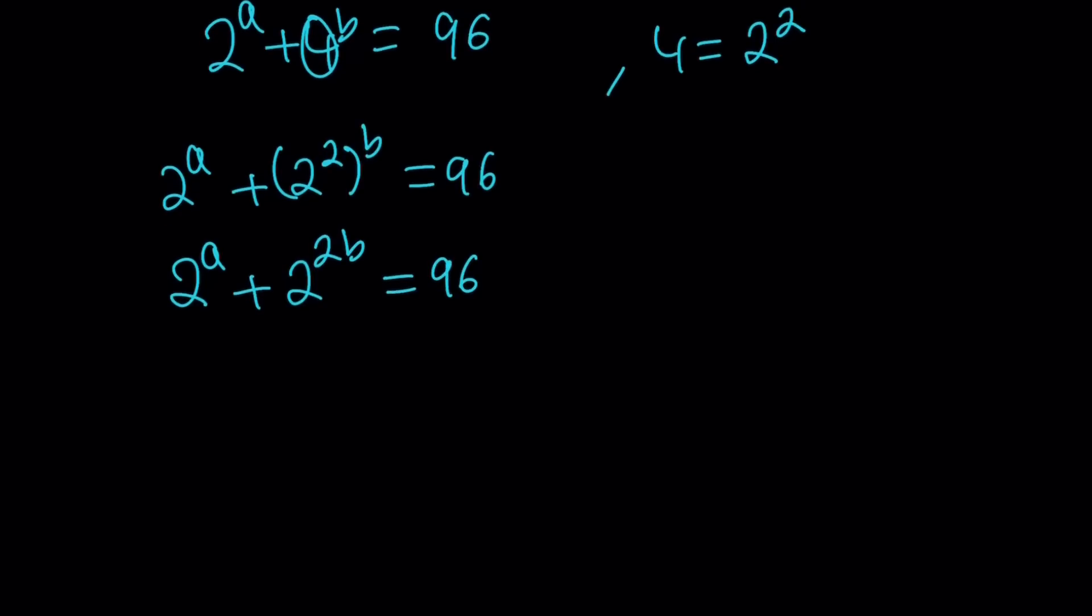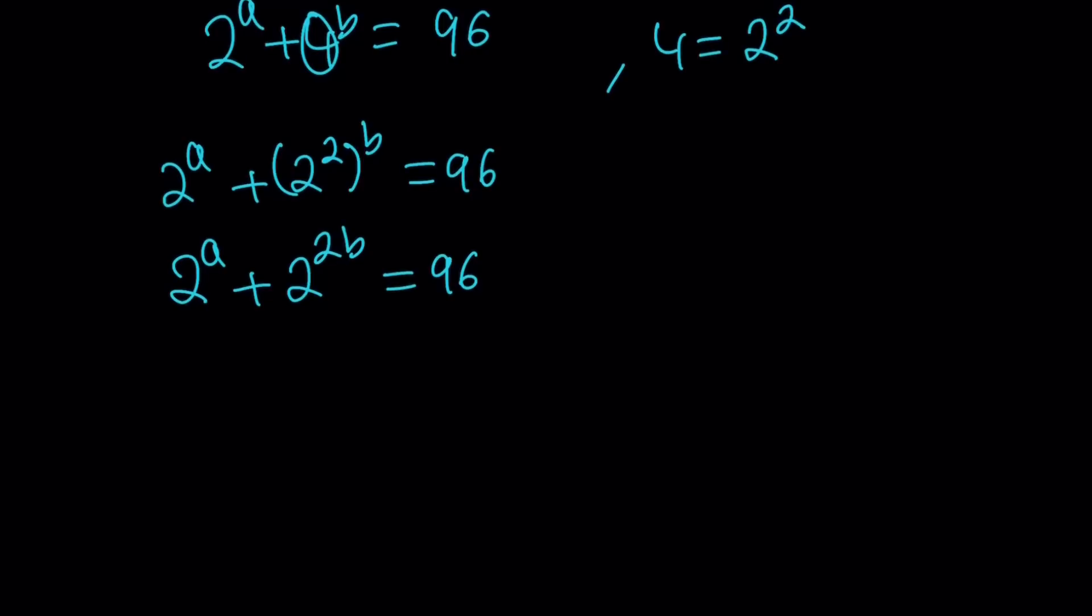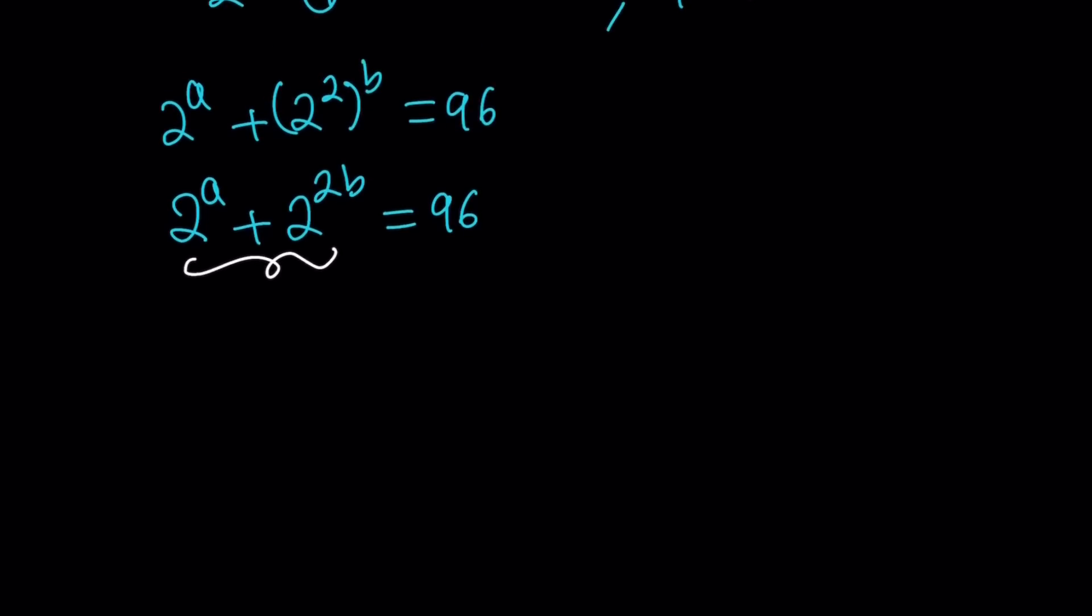So notice that 2 to the a and 2 to the power 2b are both powers of 2. So you're basically adding 2 powers of 2 and getting a 96.